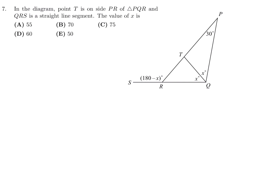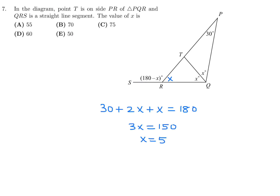Question 7: In the diagram, point T is on side PR of triangle PQR, and QRS is a straight line. Find the value of x. If the exterior angle is 180 minus x, then the interior angle at that vertex is x. The triangle has angles 30, 2x, and x, which must add up to 180. So 3x equals 150, and x equals 50. Number 7, the answer is E.